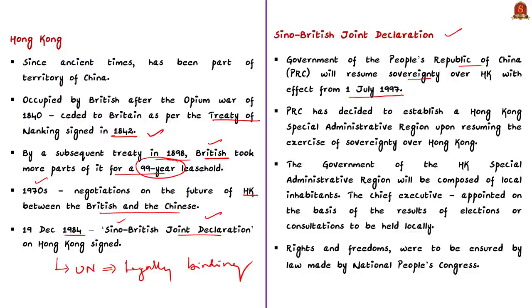In this declaration it was agreed that the government of the People's Republic of China would resume sovereignty over Hong Kong with effect from 1st July 1997, and Hong Kong was to become a Special Administrative Region of China. The declaration stated that the government of the Hong Kong SAR would be composed of local inhabitants and the chief executive would be appointed on the basis of elections or consultations held locally. The current social and economic systems and lifestyle in Hong Kong would remain unchanged. The rights and freedoms — including freedom of speech, freedom of the press, the right to assemble and to form associations — were to be ensured by a law called the Basic Law.